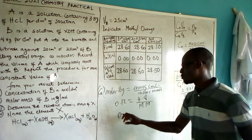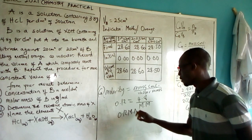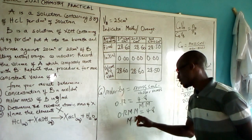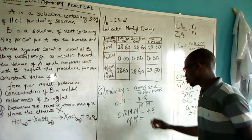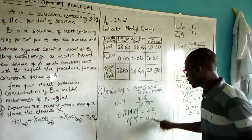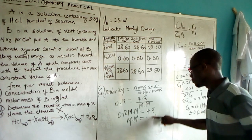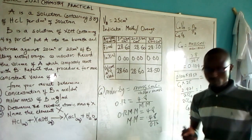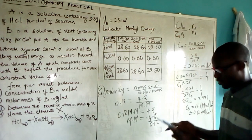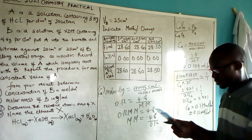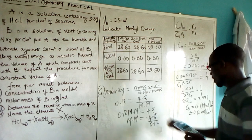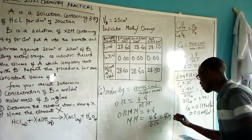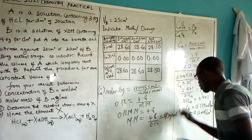Which means molar mass = 4.8 ÷ 0.12 = 40 g/mol. So the molar mass of XOH is 40 grams per mole.